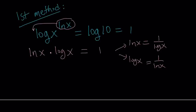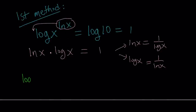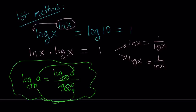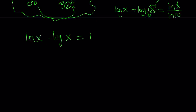In this case I'm going to use ln, the natural logarithm. The change of base formula works like this: if you have log a with base b and you want to convert it to another base, you write log a over log b with the same new base. So a goes on top and b goes on the bottom. Since I'm using ln, log x — which is log x with base 10 — turns into ln x over ln 10.